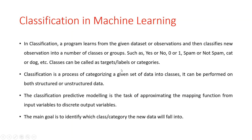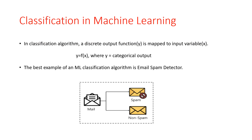The best example of a machine learning classification algorithm is an email spam detector. The most important example when using classification is spam emails or not spam emails. We have to find out which emails are spam and which are non-spam emails. By using the classification algorithm, we can easily categorize them.